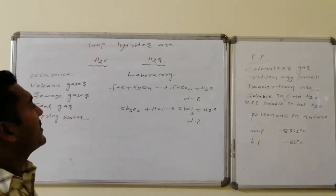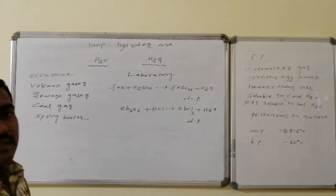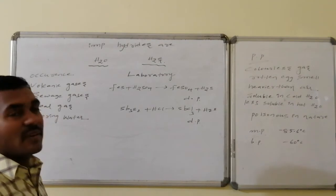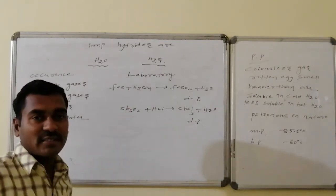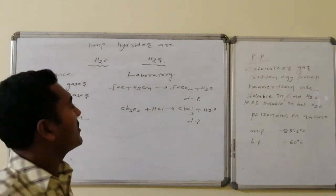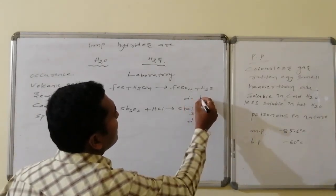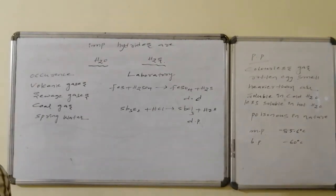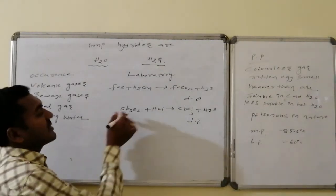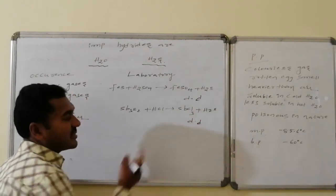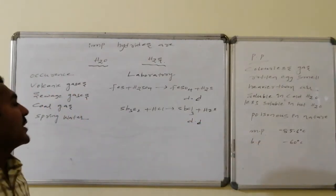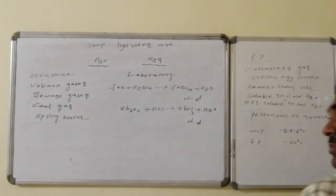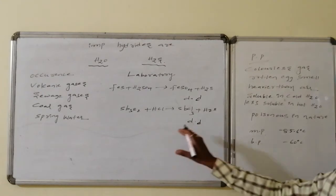In the laboratory, H₂S is prepared by the reaction of ferrous sulfide (FeS) with dilute sulfuric acid, yielding ferrous sulfate and H₂S via a double displacement reaction. Similarly, antimony sulfide reacts with HCl in a double displacement reaction to produce antimony chloride and H₂S.